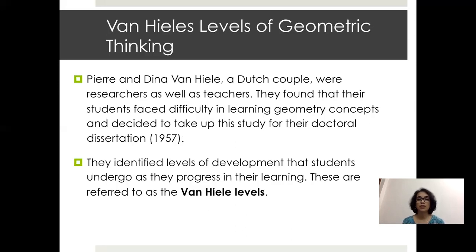The Van Hiele levels of geometric thought are a very important theory associated with the learning of geometry. A Dutch couple, Pierre and Dina Van Hiele, were researchers as well as school teachers. They found that their students faced major difficulties in learning geometrical concepts, and they explored this further in their doctoral dissertation, submitted in 1957. Through their research, they identified different levels of development that students undergo as they progress in their learning of geometry, often referred to as the Van Hiele levels.